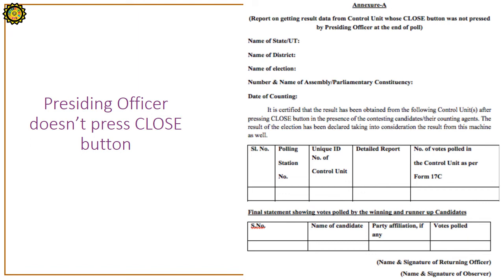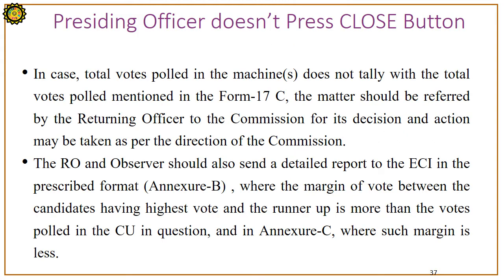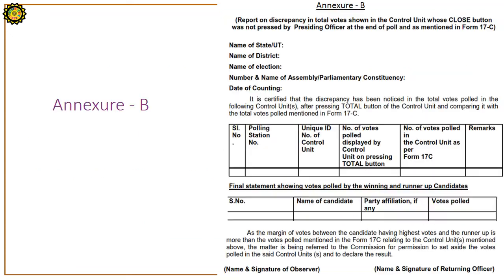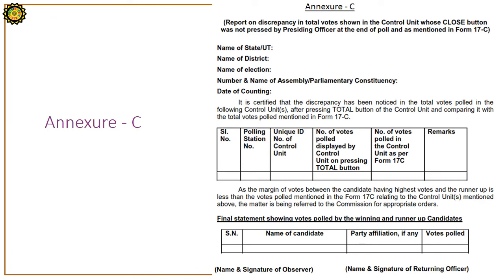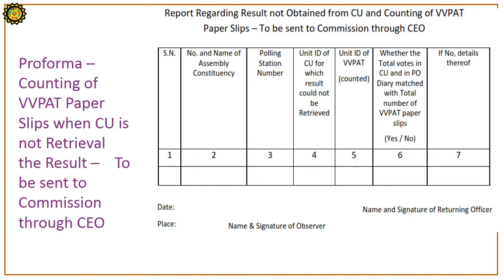Format A is shown on screen. If total votes polled in a machine do not tally with Form 17C, the matter should be referred to the commission for decision. The Returning Officer and observer must send a detailed report to ECI in prescribed Format B (where margin is more than votes in the control unit) or Annexure C (where margin is less). Formats of Annexure B and C are shown on screen, along with the format of the report regarding results not obtained from the control unit and VVPAT slip counting.